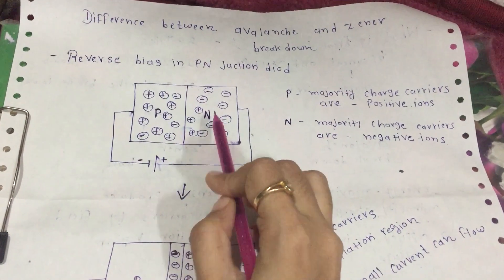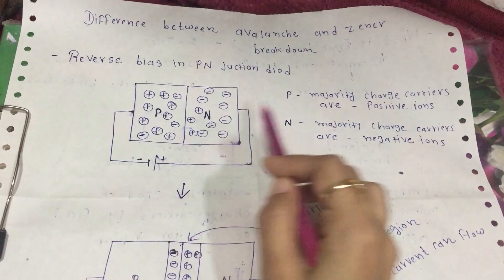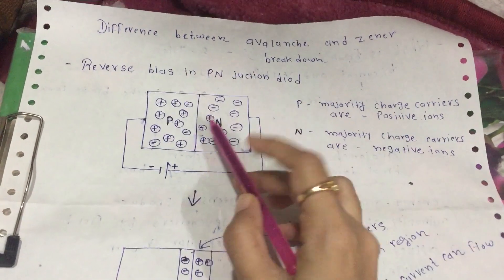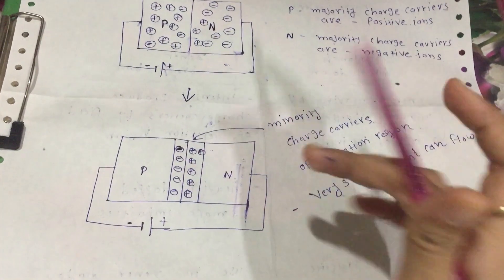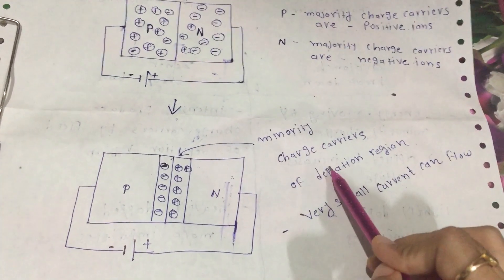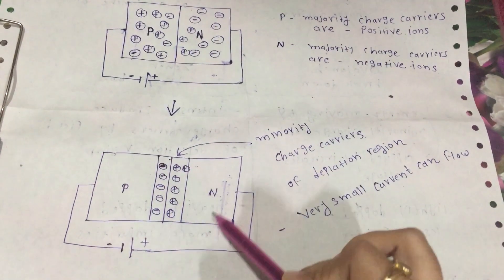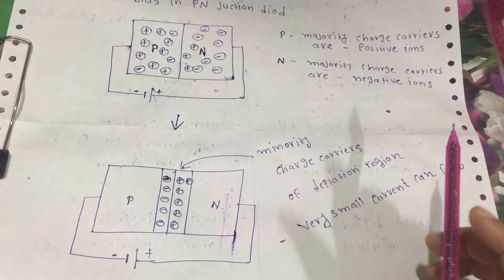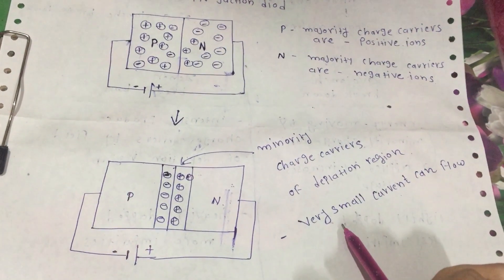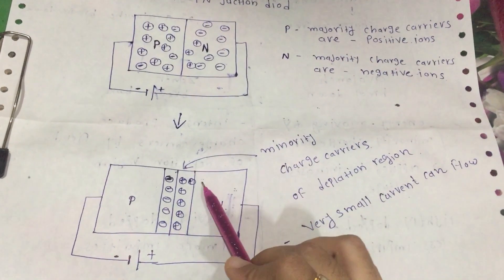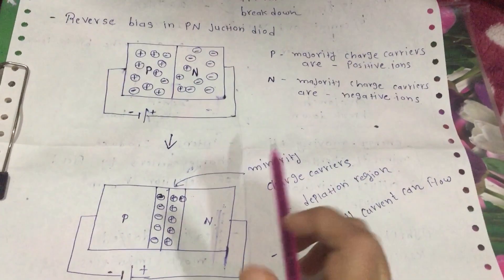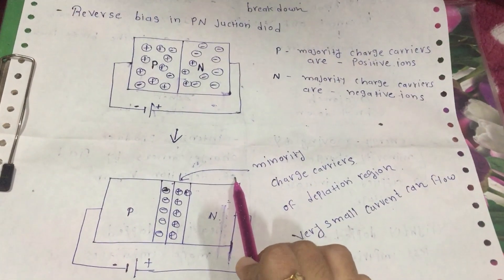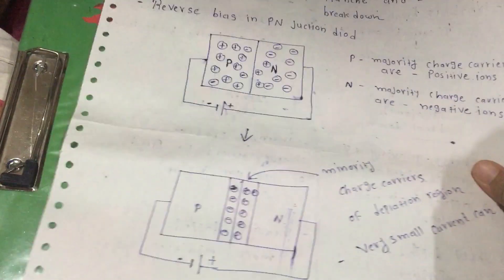In P-type, the majority charge is positive and the minority charge is negative. In N-type, the majority charge is negative and the minority charge is positive. Because of the minority charge in the depletion region, a very small amount of current will flow, which is not used in practice. This is reverse bias.